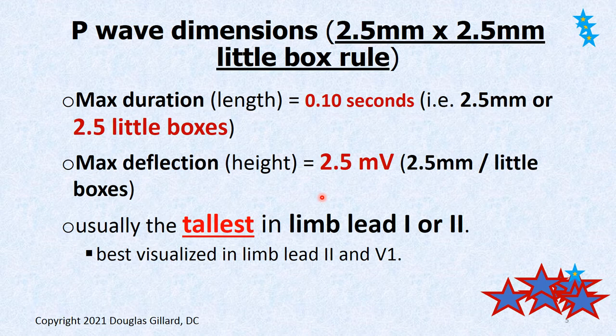P wave dimensions: there is a 2.5 little box rule. The P wave should always fit inside a 2.5 millimeter box on the EKG paper grid. The maximum length it can be is 2.5 millimeters — that's 0.04 times 2.5, which equals 0.10 seconds. That's the maximum duration, and the maximum deflection or height of the wave is also 2.5 millivolts.